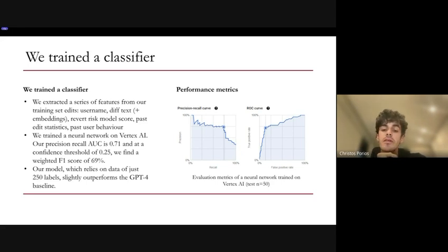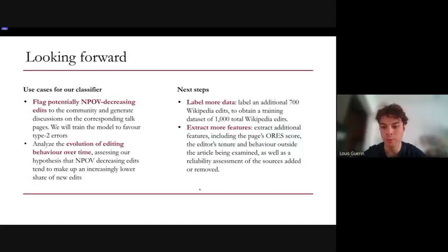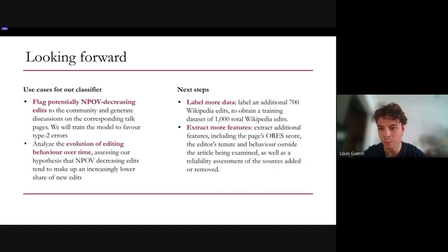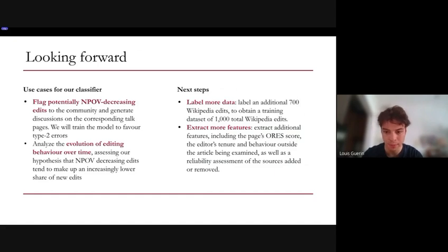These results are promising, especially considering the limited amount of training data we have for the study. Looking ahead, we want to improve the performance of our model by doing two things. First, we want to label more data — ideally reaching a dataset of at least a thousand Wikipedia edits to train our classifier. Second, we want to extract more features, including the page's ORS score, the editor's tenure and behavior outside the article, or a reliability assessment of the sources being added or removed.